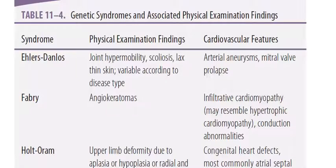This table shows genetic syndromes and associated physical examination findings. Ehlers-Danlos syndrome: physical examination findings include joint hypermobility, scoliosis, and thin skin, variable according to disease type. Cardiovascular features include arterial aneurysms and mitral valve prolapse.